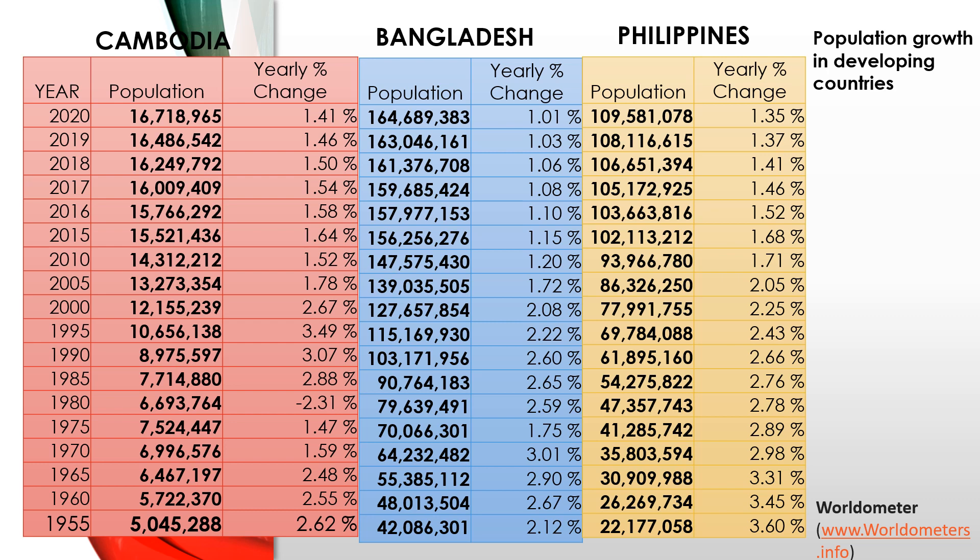For developing countries, let's look first at Cambodia. For the current year 2020, Cambodia has a 1.41% yearly change. For Bangladesh, it is 1.01%, and for the Philippines, it is 1.35%. As you can observe, the changes for these developing countries are similar — they are at the same level with higher population growth.